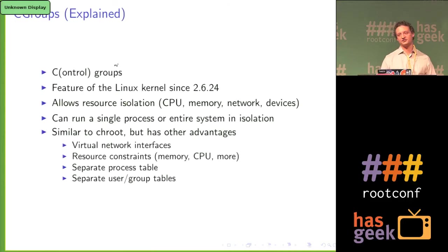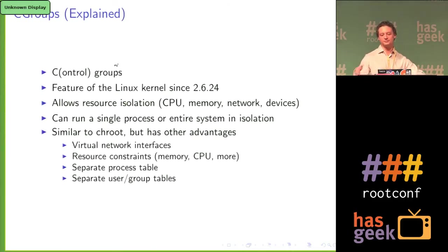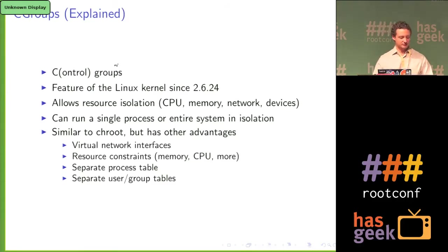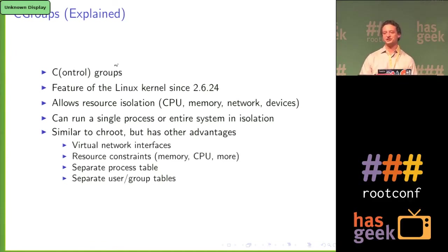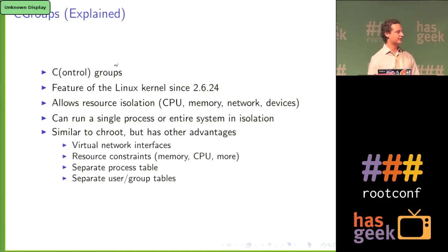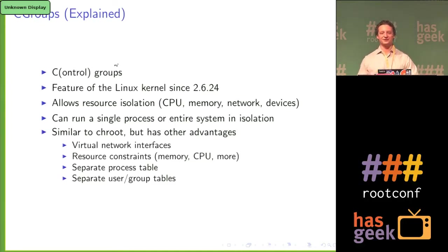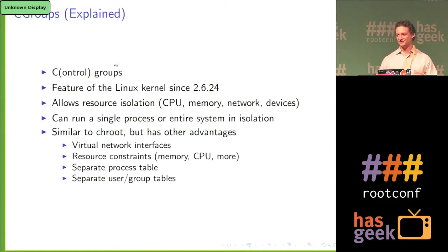Cgroups stands for control groups and has been a feature of the Linux kernel for about five years. It allows resource isolation — multiple user lands where you can set memory limits, set how many CPUs a container has, freeze things, and do this for a single process or a whole system. If any of you are familiar with chroot, it's kind of like that but provides a few more advantages — you can have real network interfaces, limit other resources, and it creates different process and user tables. With chroot, if a daemon starts and you exit, it's still running and consuming resources on the bare box, which can create havoc.